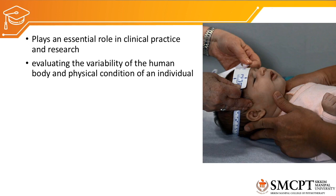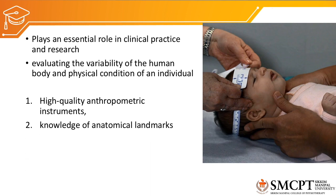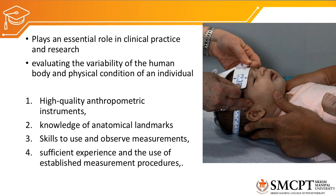To efficiently record findings or data from anthropometric measurements, we need high-quality anthropometric instruments with which we will measure various parts of the body, as well as thorough knowledge of anatomical landmarks where we place the measurement tools. As physical therapists, we should be highly skilled to use and observe the measurements. There should be sufficient experience in using established measurement procedures, and we should be reviewing the validity and reliability of the equipment or measuring tools.